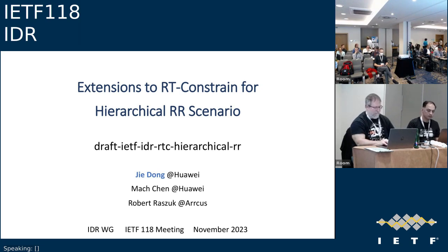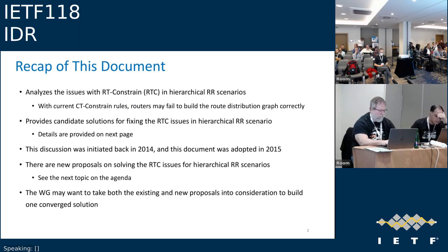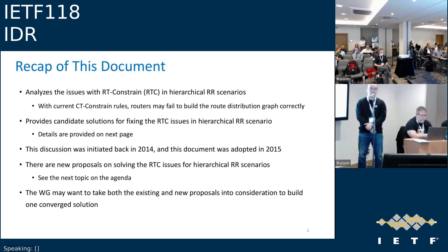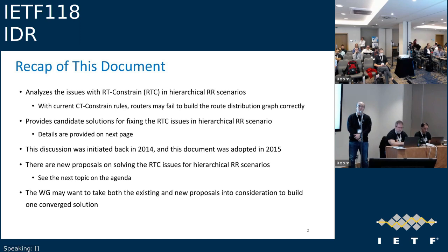This is Zhidong from Huawei. This document analyzes the issues with RT constraint in hierarchical RR scenarios. With the current RT constraint propagation rules, some routers may fail to build the route distribution graph correctly for VPN routes. This document proposes candidate solutions to fix these RTC issues in the hierarchical RR scenario. Recently there are new proposals on solving these RTC issues, so the working group may want to consider both the existing and new proposals to figure out a converged solution.